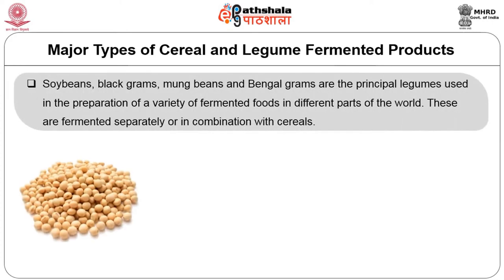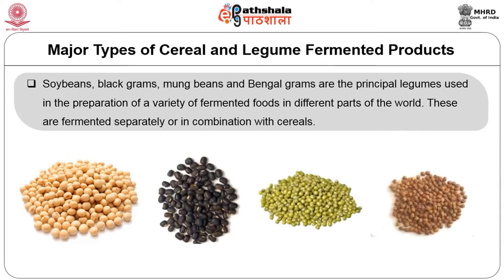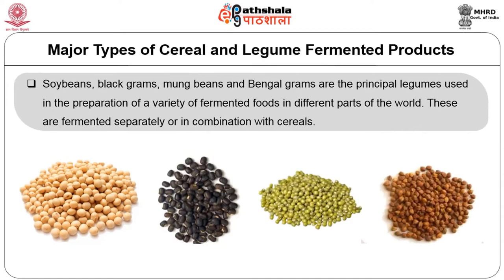The major types of cereal and legume fermented products use soybeans, black grams, moong beans and Bengal grams as the principal legumes in the preparation of a variety of fermented foods in different parts of the world. These are fermented separately or in combination with cereals. This picture shows the list of some important indigenous fermented foods of the world.